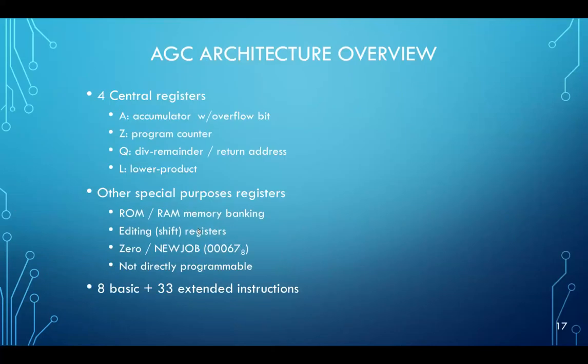So again, it had four central registers, an accumulator, program counter, the Q register, which stored the remainder after division. The L register, which stored the lower products after multiplies. The Q register also served as the return address for jump to subroutines. There were a number of other special purpose registers as well, for example, editing registers. You could write data to a particular register and just the act of writing it would shift it up or down some number of bits.